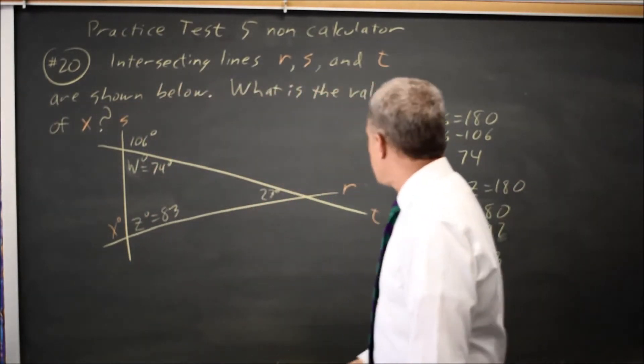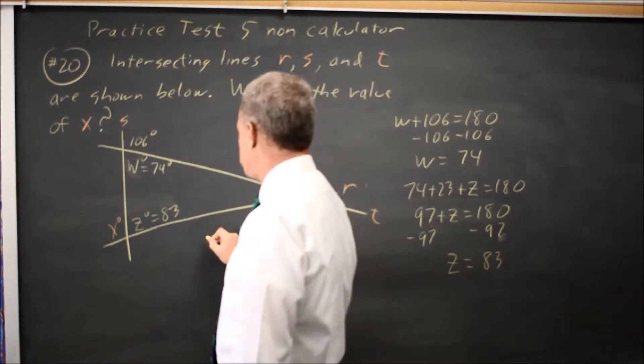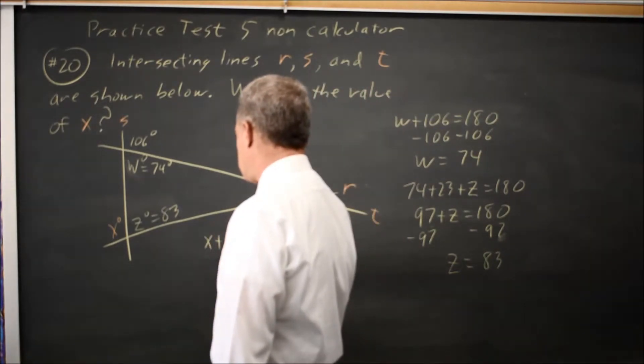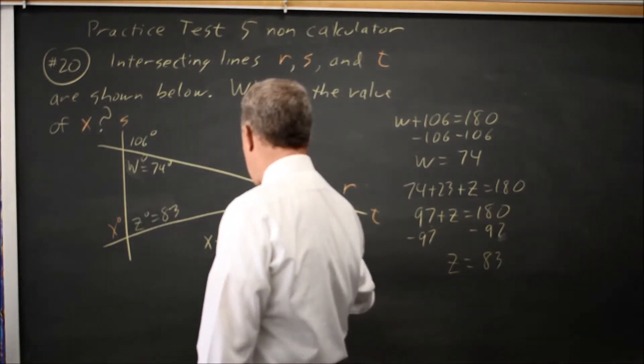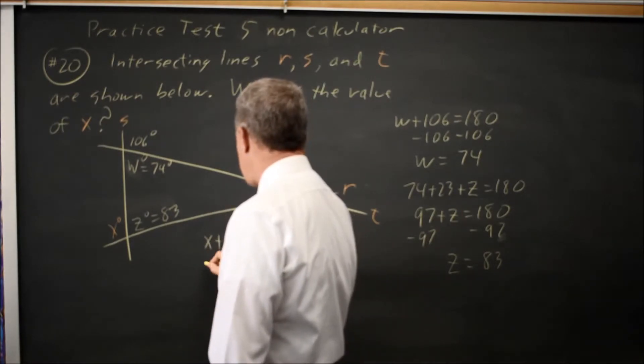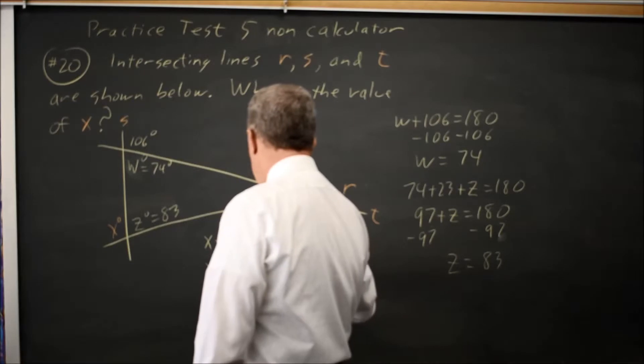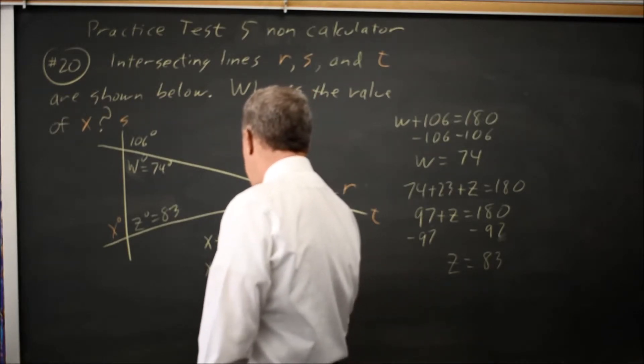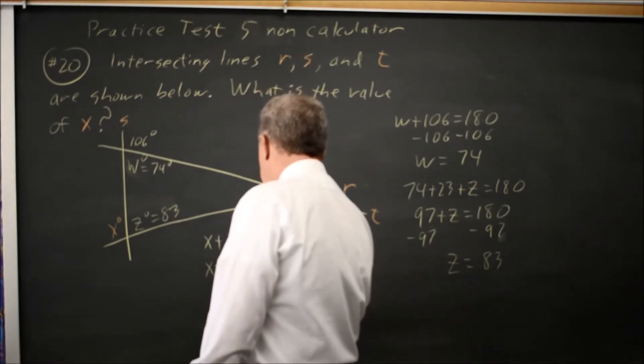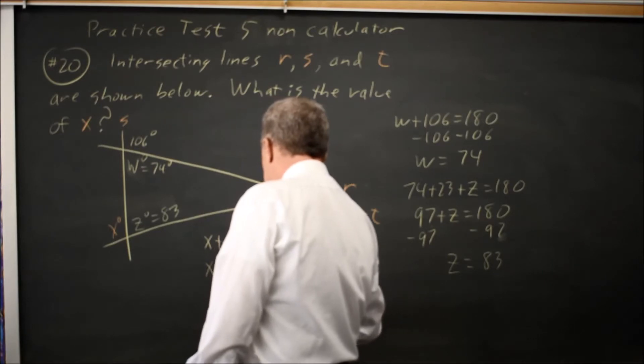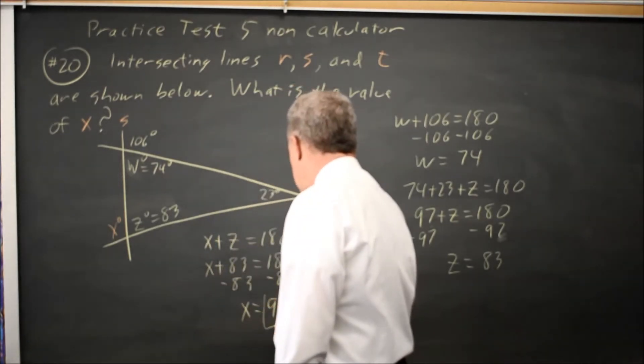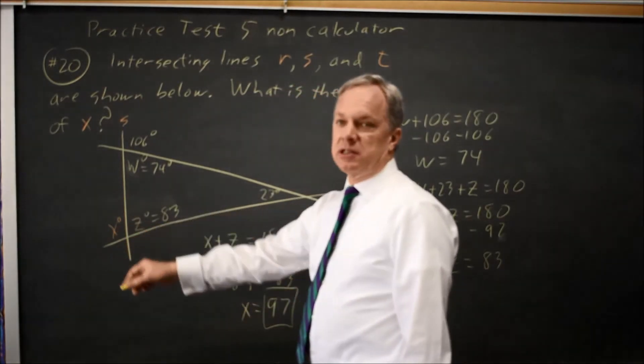Now, Z plus X equals 180, and Z is 83 degrees, so X plus 83 equals 180. Subtract 83 from both sides, and I get X equals 97 because the measure of this angle is 97.